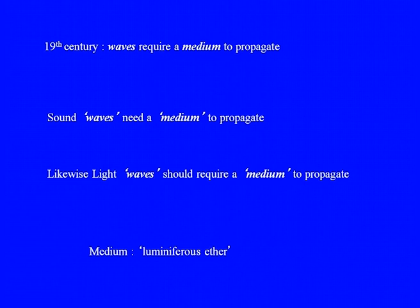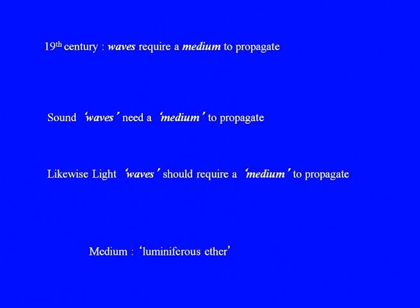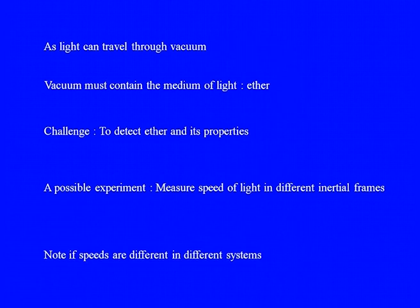Since the uncoupled equations follow the form of the wave equation, Maxwell concluded that light must be an electromagnetic wave. This had a profound significance, because in the 19th century, people thought that waves actually require a material medium to propagate.